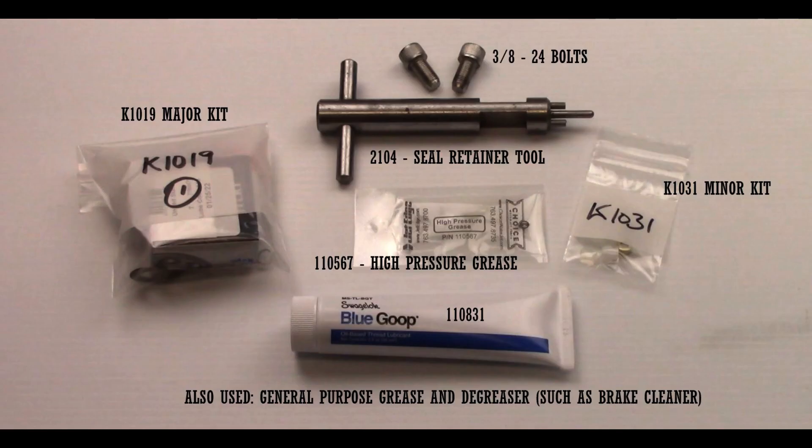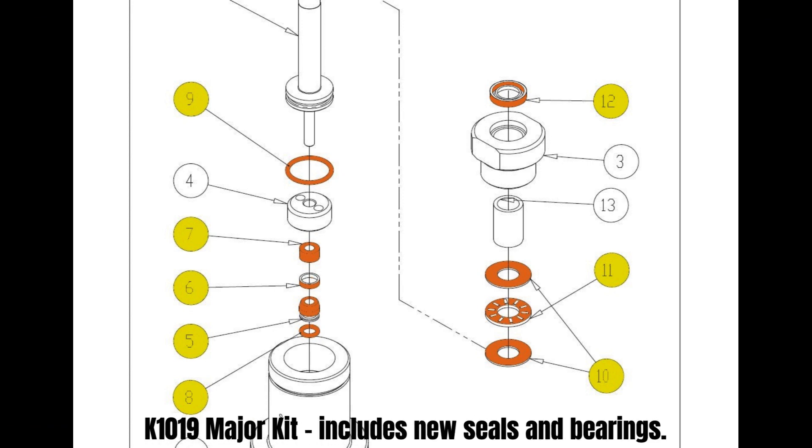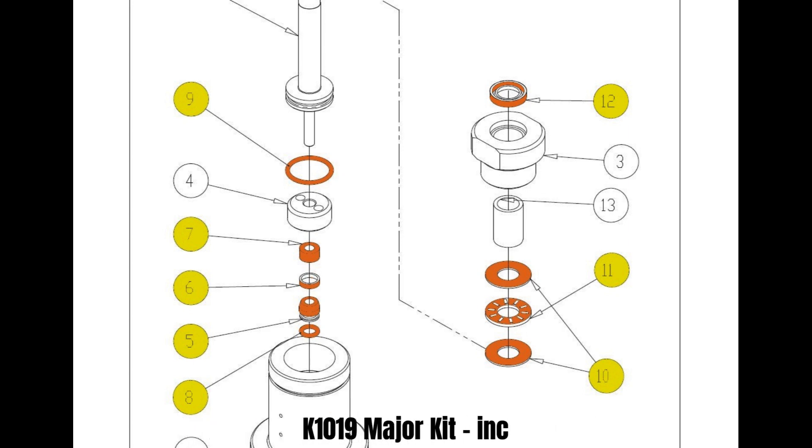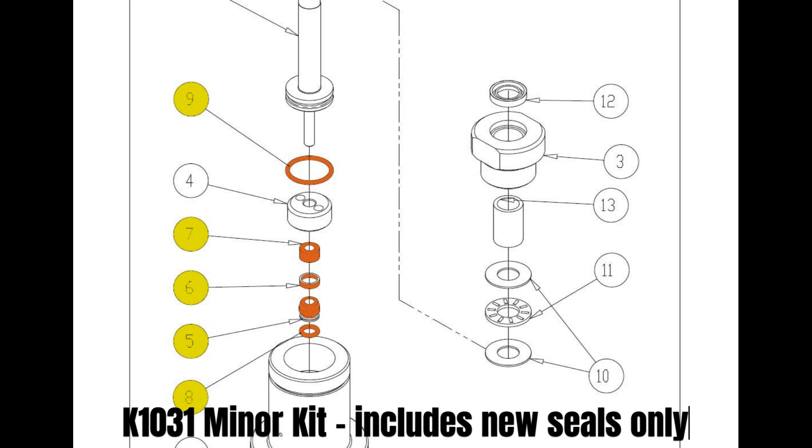Required equipment: high rail swivel seal retainer tool part 2104, precision lube, and high pressure grease. The K1019 major kit includes new seals and bearings. The K1031 minor kit includes new seals only. This is the most common repair kit used.